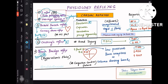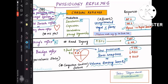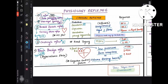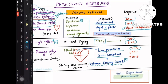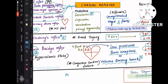In the right atrium, there are low-pressure baroreceptors or volume-sensing baroreceptors that sense fluid overload. As a compensatory mechanism, the heart increases its rate — so increased heart rate — and there is decreased ADH. ADH is antidiuretic hormone, which retains fluid in the body, so decreasing ADH promotes diuresis.